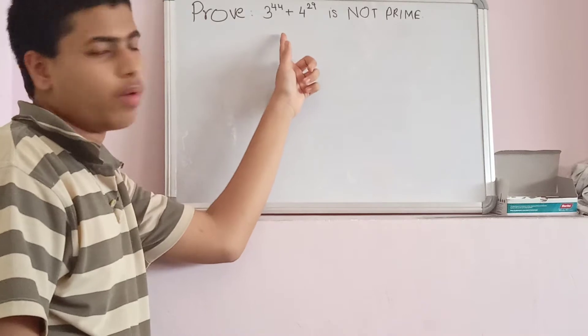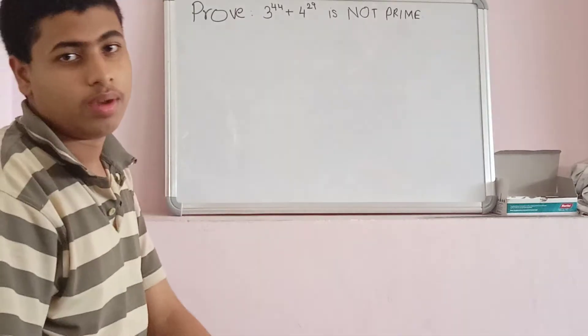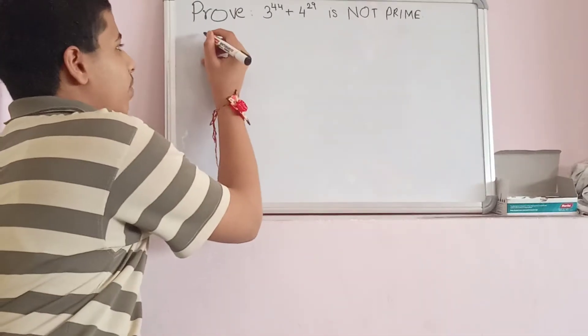We have to prove that 3 to the power of 24 plus 4 to the power of 29 is not a prime number. Let's recall what Sophie Germain identity says.